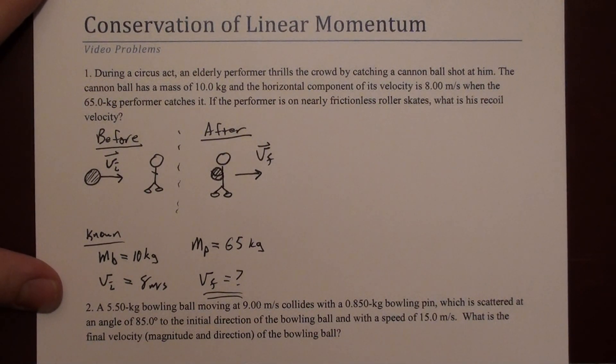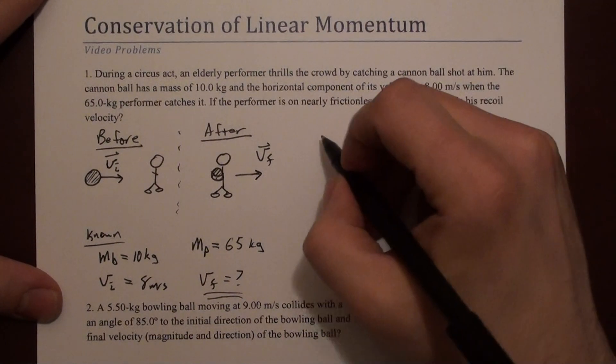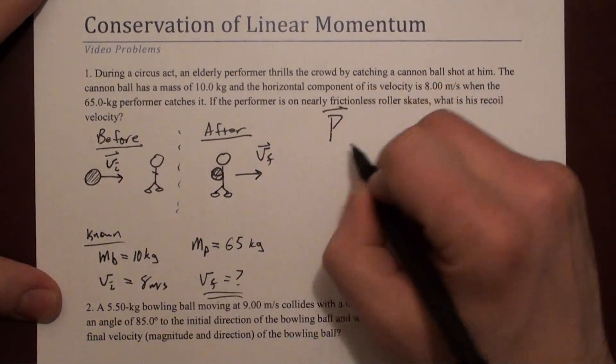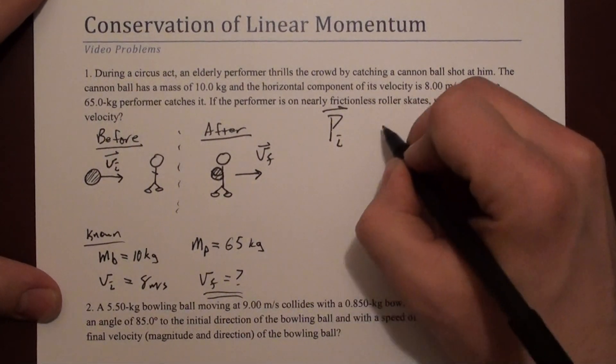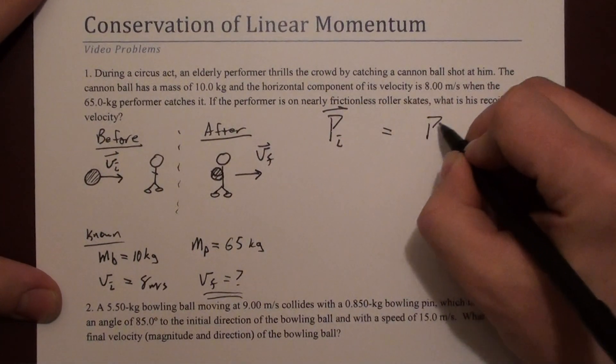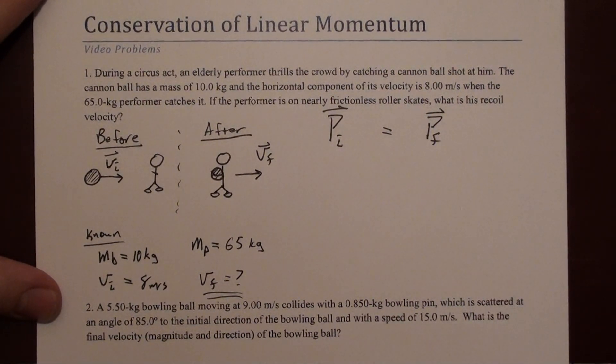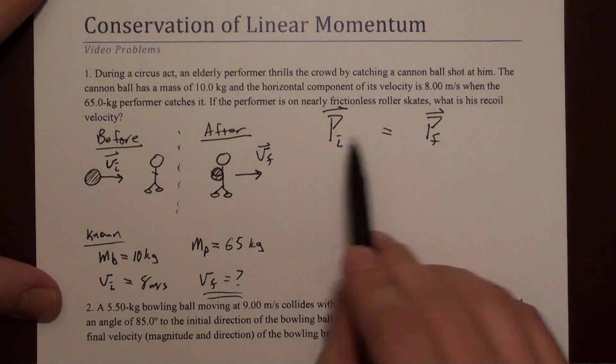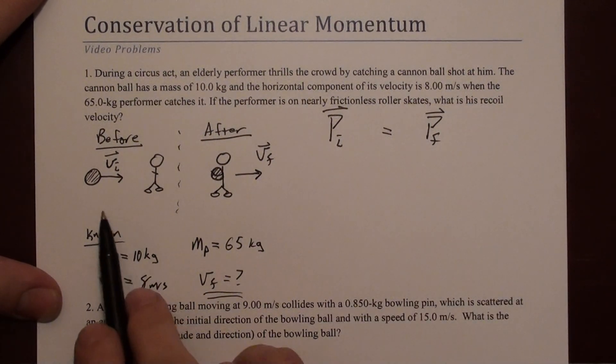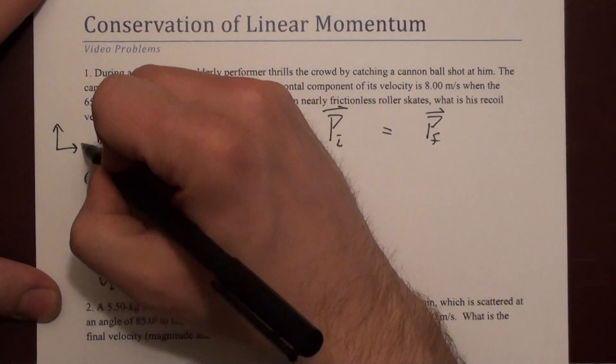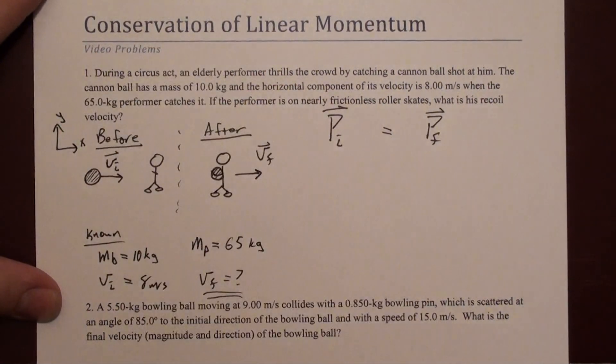We're going to do conservation of momentum. We write that as the total momentum initial equals the total momentum final. We notice this is a vector equation, but if we look at our problem and draw some axes, all of the interesting stuff is in one dimension.